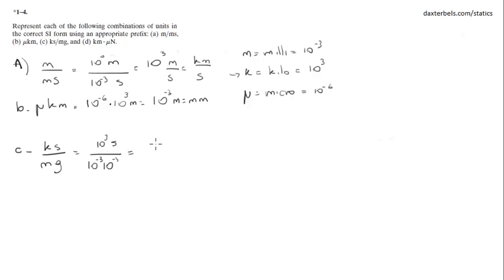That would be 3 minus negative 6, which equals 10 to the 9 seconds per kilogram, or gigaseconds per kilogram, because G stands for giga, which is 10 to the 9.